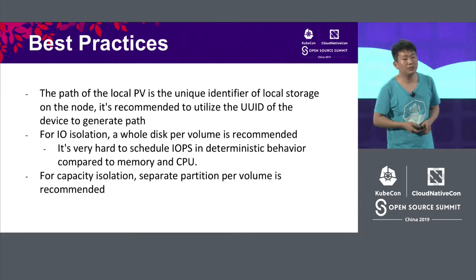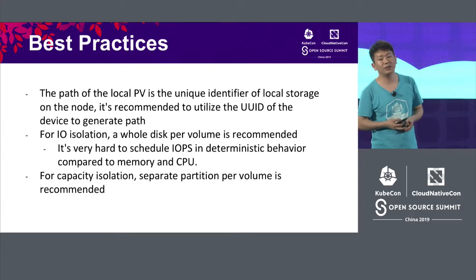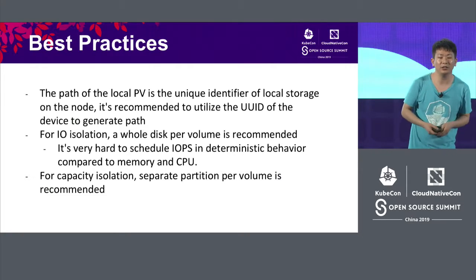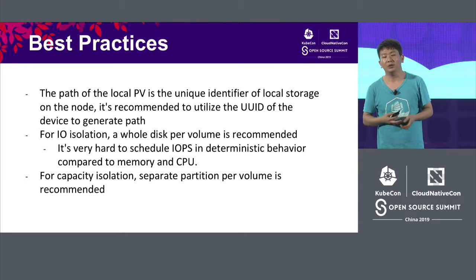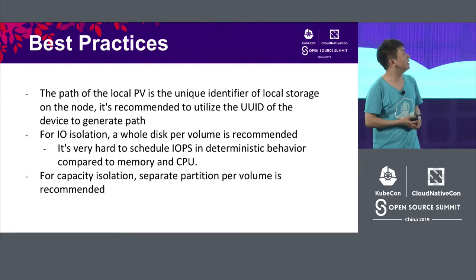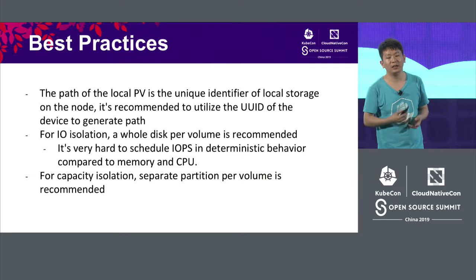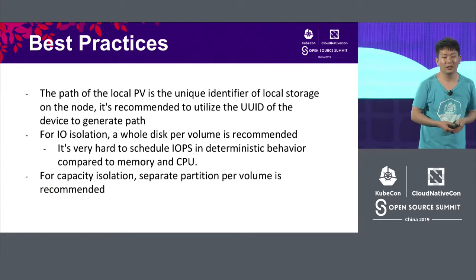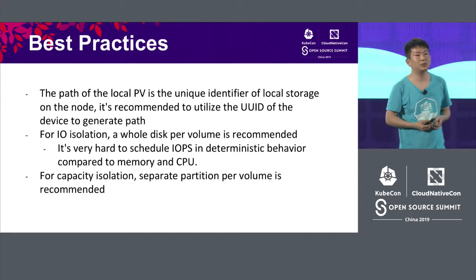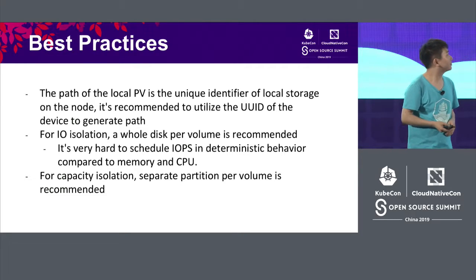Here are the best practices for local PVs. The path of the local PV is the unique identifier of the local storage on the node. It is recommended to use the UUID of the device to generate the path. For capacity isolation, a whole disk per volume is recommended. It is very hard to schedule IOPS with deterministic behavior compared to memory and CPU, so separating a partition per volume is also recommended. You can also use different directories to do isolation at the file system level.